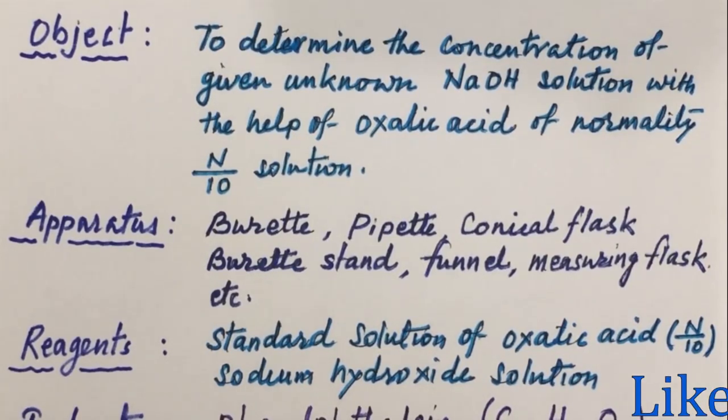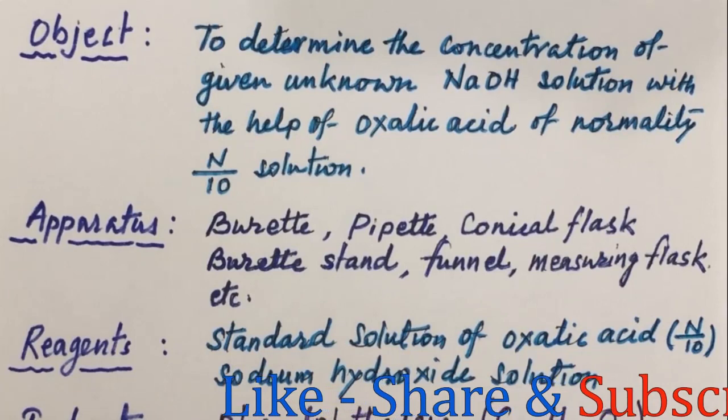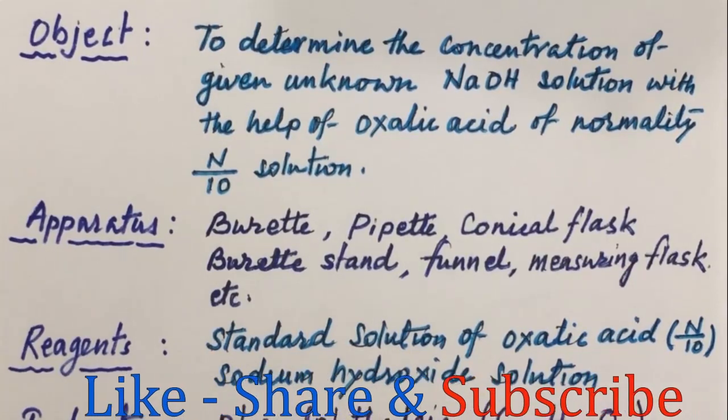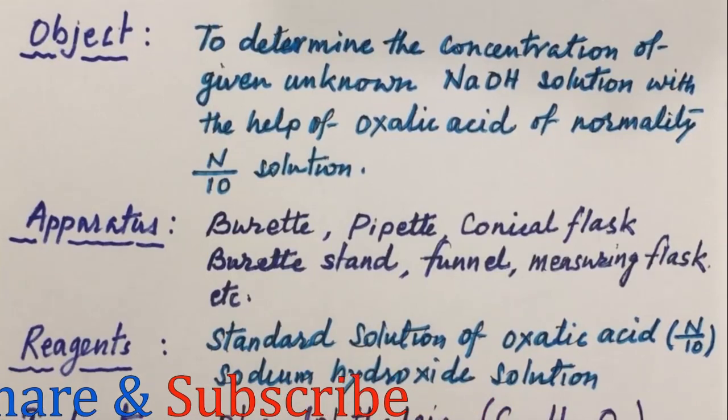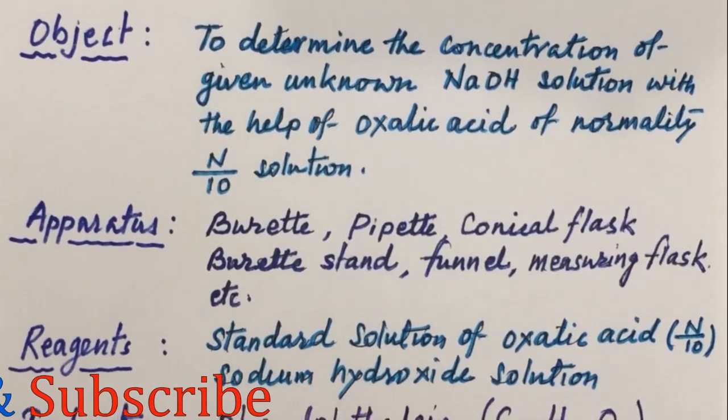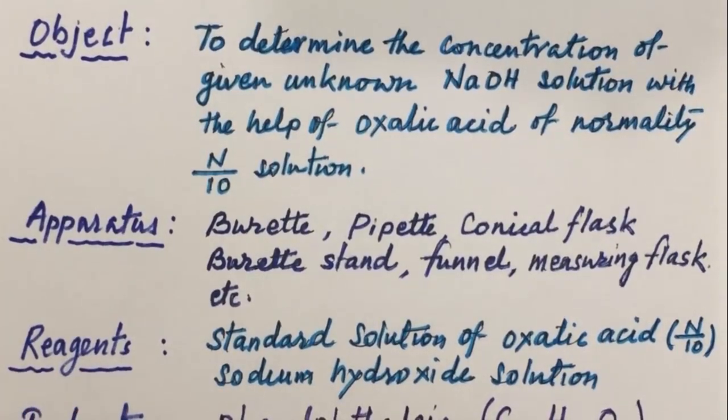We will perform this experiment with the help of single titration method. We know that titration is a technique where a solution of known concentration is used to determine the concentration of an unknown solution. The reagent of known concentration is known as titrant and the substance being titrated is known as analyte.